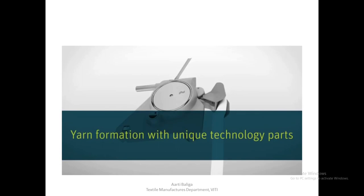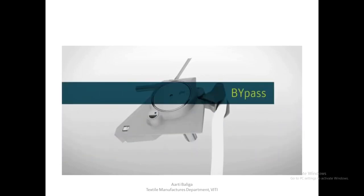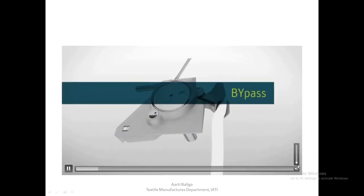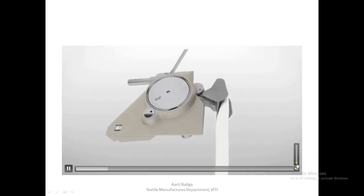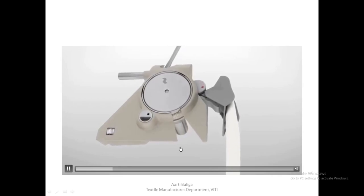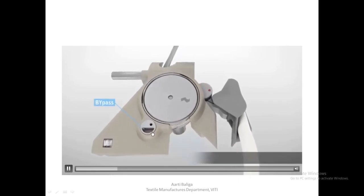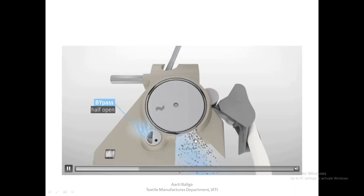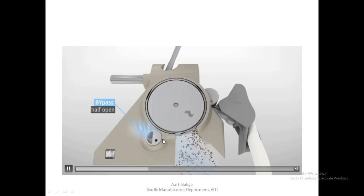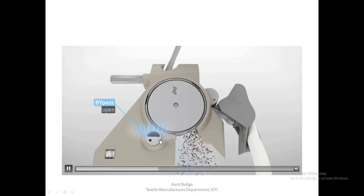Yarn formation with these unique technological parts: first, the bypass arrangement seen in the previous lecture, where we can adjust a knob to increase or decrease the amount of trash coming out through the housing — kept half open, open, or closed depending on the amount of trash in the feed material.